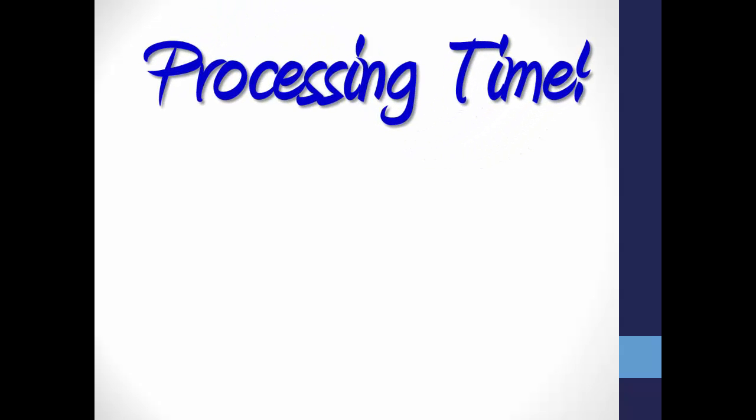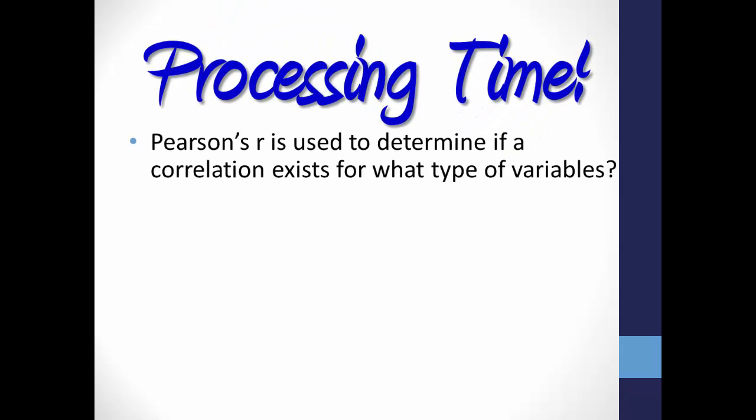Processing time. Pearson's R is used to determine if a correlation exists for what type of variables. It is looking for a relationship between two continuous-level variables, such as time spent on a treadmill and calories burned.